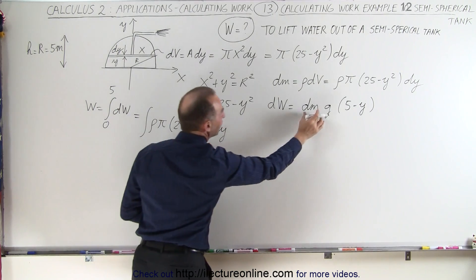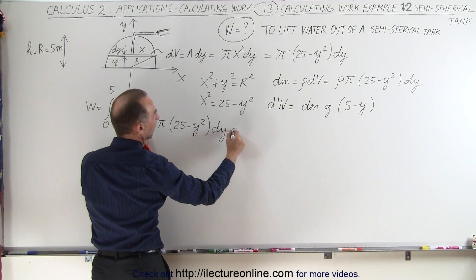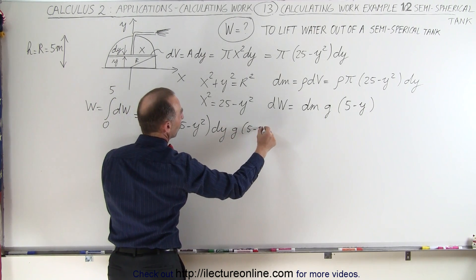So that would be dm is this quantity right here, multiply times g, and multiply times (5 - y).